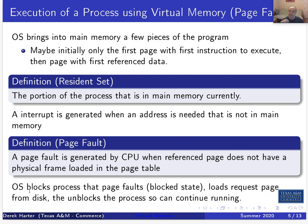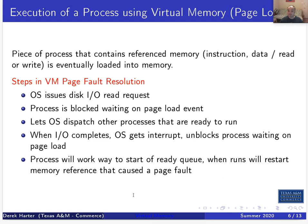When the interrupt is generated, the operating system regains control. Instead of the process continuing to run, the operating system will intercept all page fault interrupts and put that process into a blocked state - it transitions to blocked, waiting on some IO. In this case it's blocked until we have a chance to load the page with the piece of data that caused the page fault. Once it's loaded, the operating system will unblock the process and return it to a ready state so it can continue running.